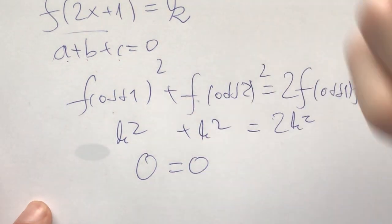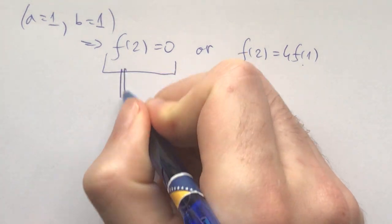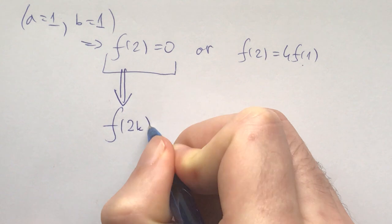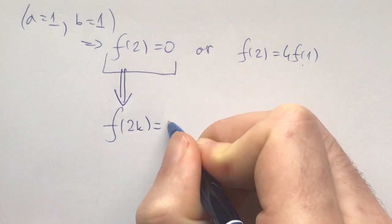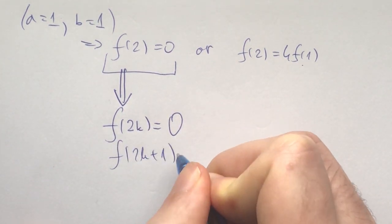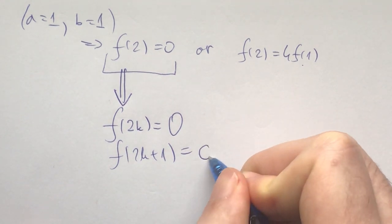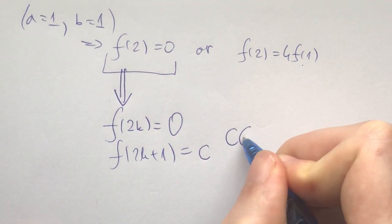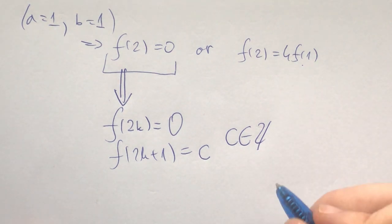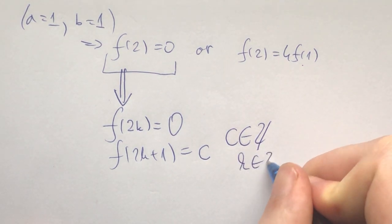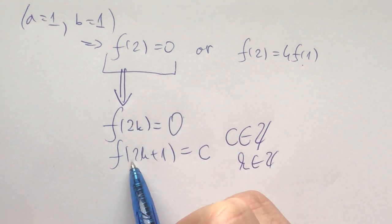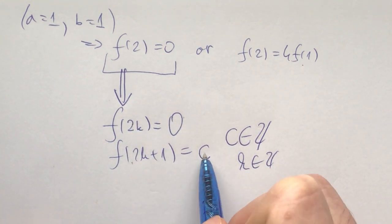So let's go back now. This case implies f(2k) = 0 and f(2k+1) = c for some constant c that is any integer, meaning f of even is 0 and f of odd is some constant c.